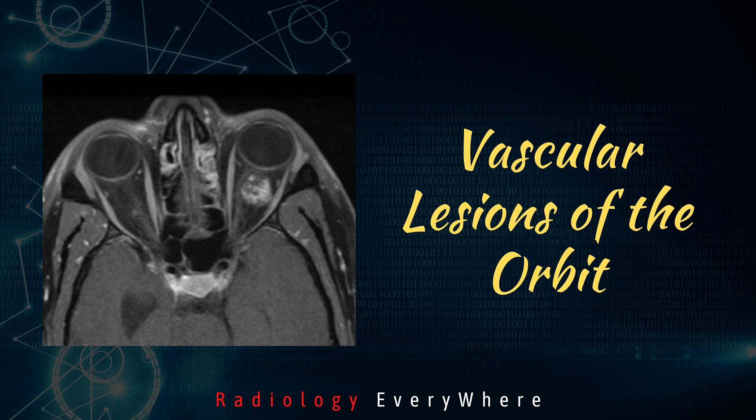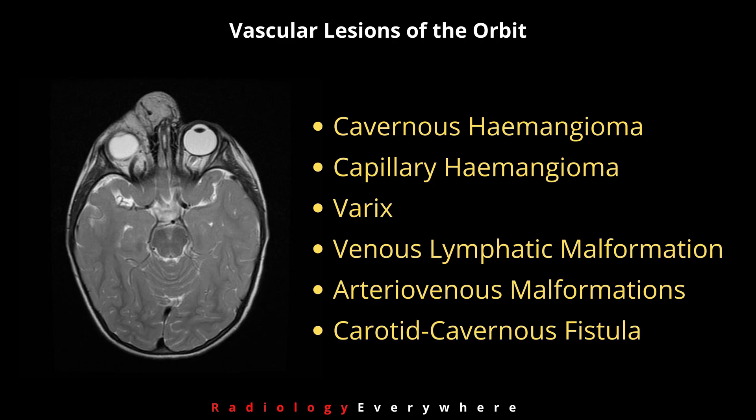Hello everyone, welcome to Radiology Everywhere YouTube channel. Today we are going to talk about vascular lesions of the orbit. In this video I will discuss cavernous hemangioma, capillary hemangioma, varices, venous lymphatic malformation, arteriovenous malformation, and carotid cavernous fistula.